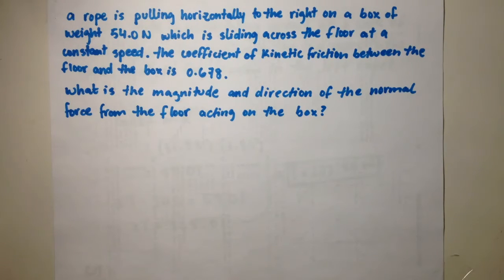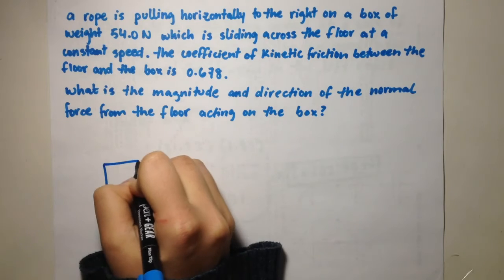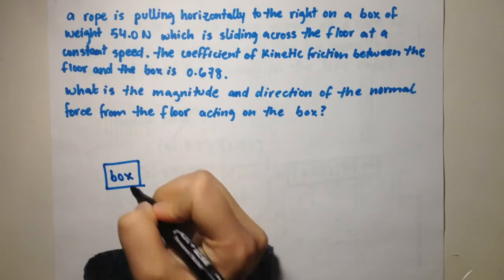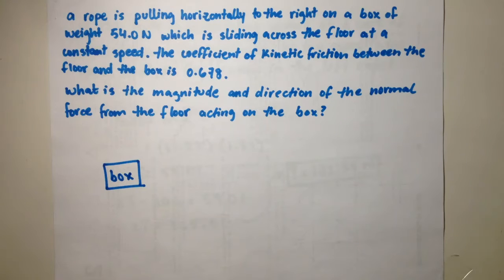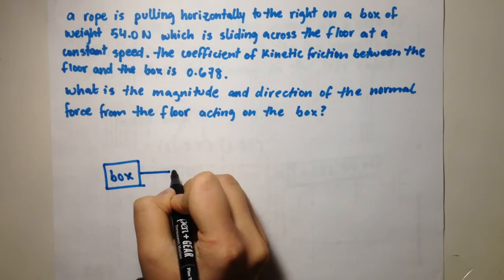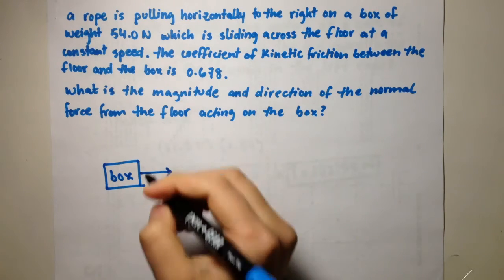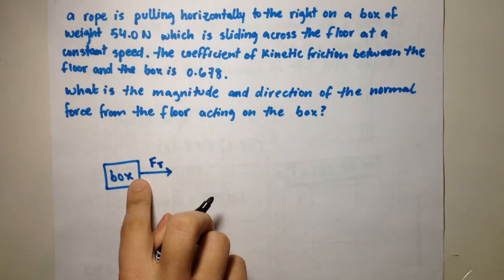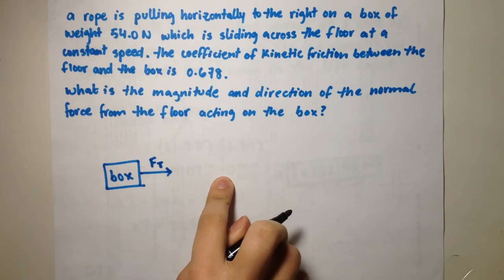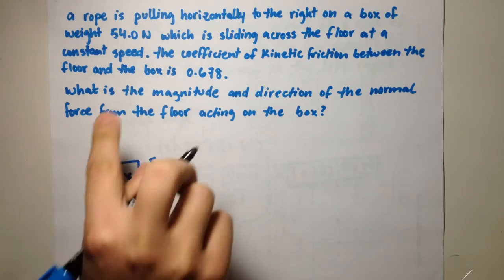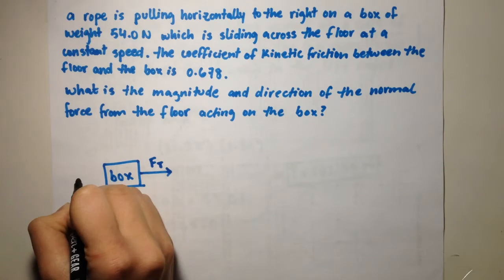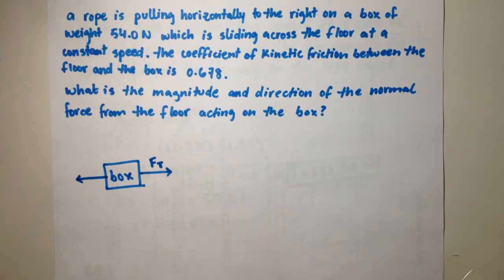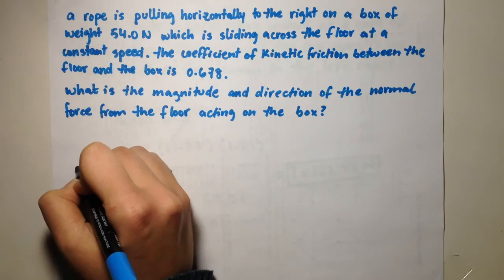First, let's make a free body diagram of this problem to understand it better. This is the box. We have the force of the rope that is being pulled — that is the tension — so let's write force of tension, which is going towards the right. Since there is a force to the right, there is an equal force to the left because it says constant speed — an equal force of friction that is opposite the force of tension, so force of friction.